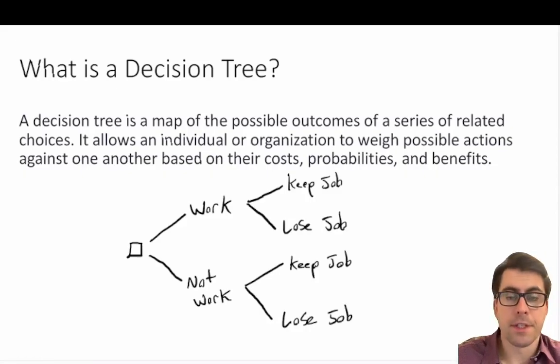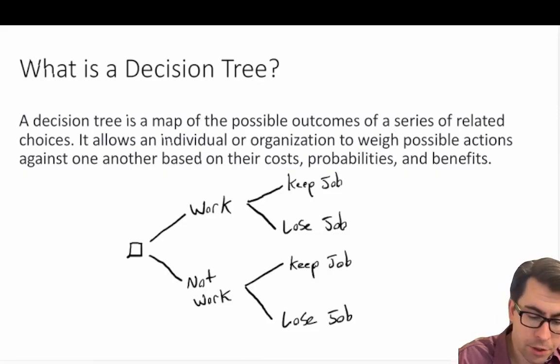So in this very simple example we have our decision tree constructed properly. We have our decision node and then we have two chance nodes.